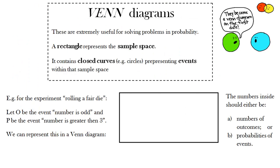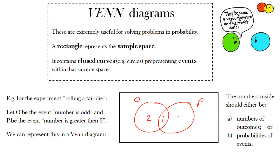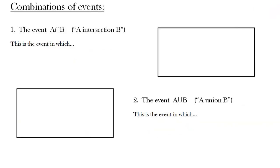Venn diagrams are extremely useful — absolutely invaluable — for understanding and visualizing probability. You draw a rectangle representing the sample space for any experiment, and loops inside represent events. The loop O represents getting an odd number when rolling a die; event P represents getting a number greater than three. We fill in the Venn diagram by counting outcomes in each region.